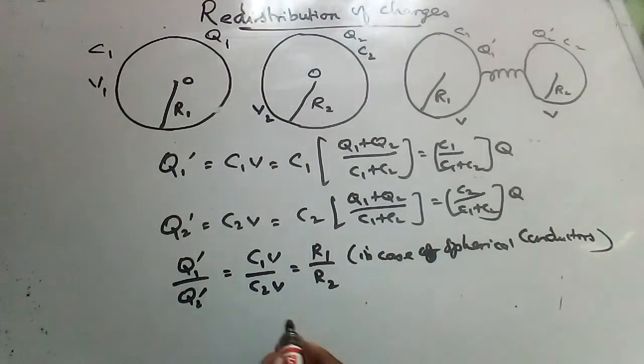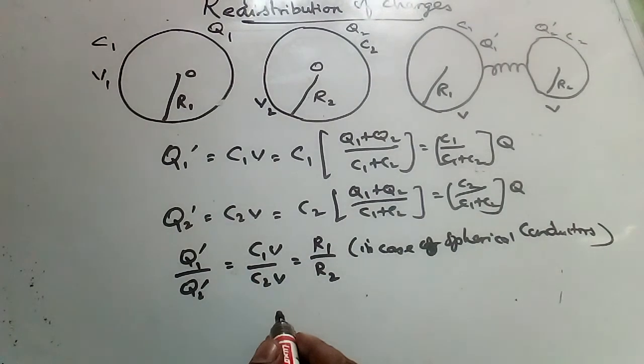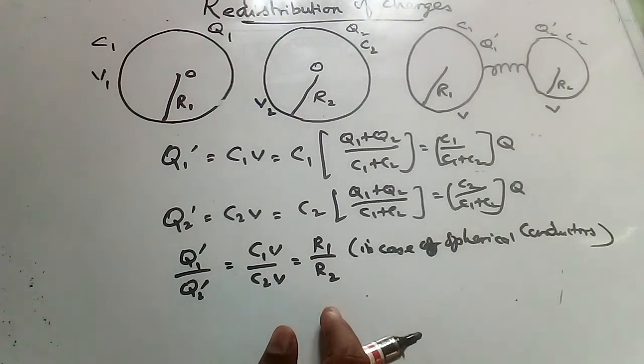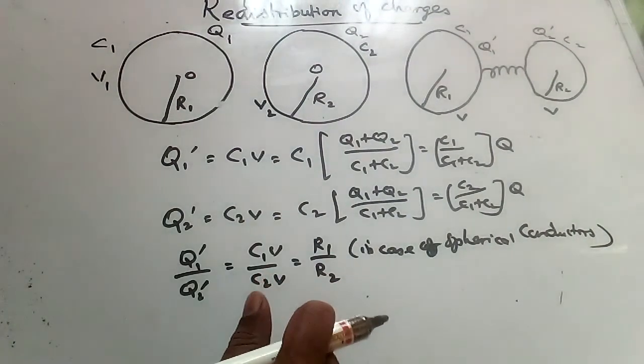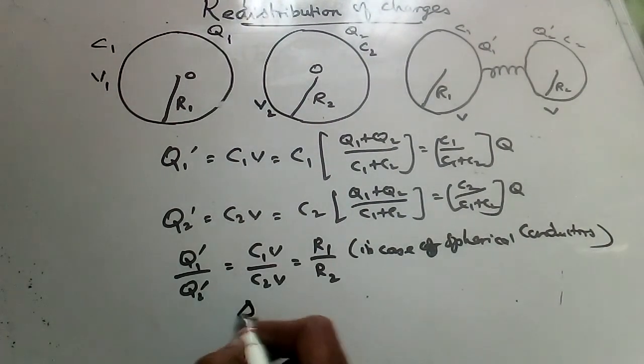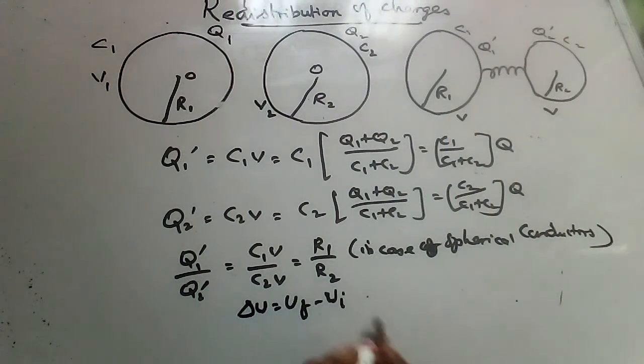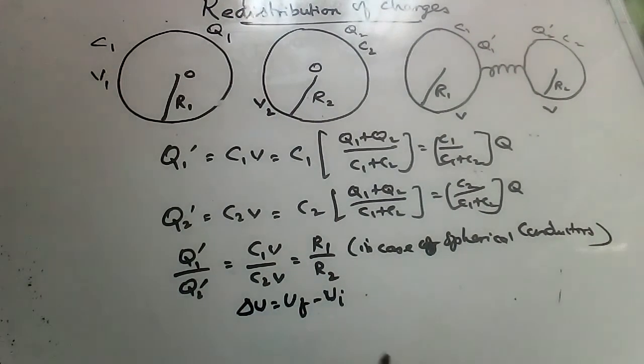Then charge flows through the conducting wire. Energy is lost mainly on account of Joule effect. Electrical energy is converted to heat energy. So change in energy Del U equal to UF minus UI, that is final energy minus initial energy.